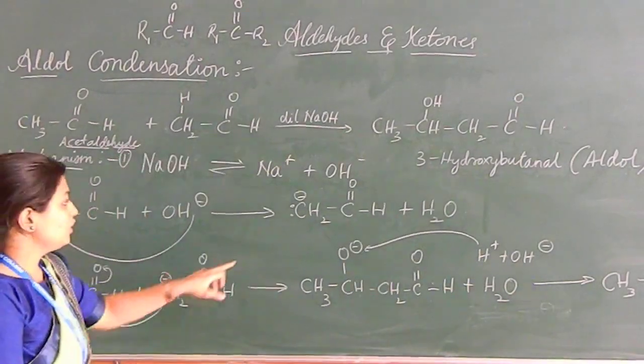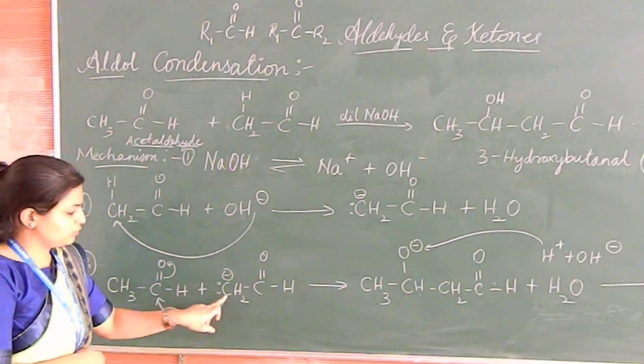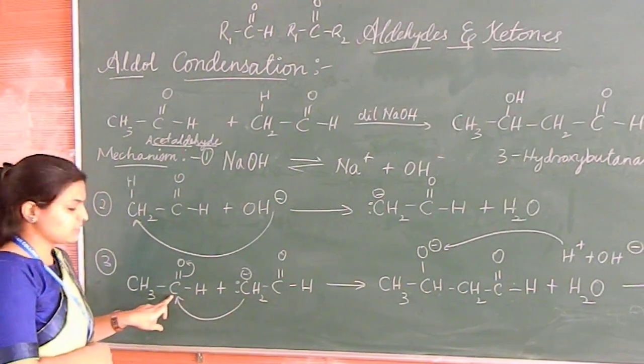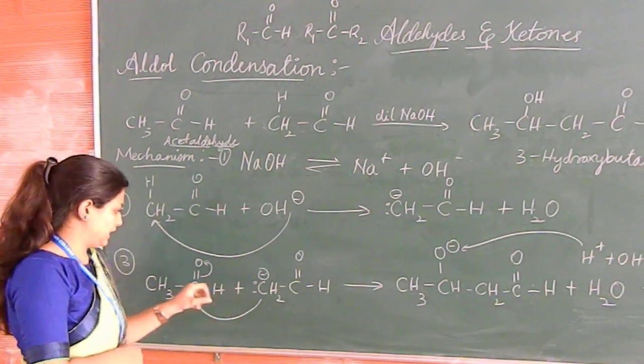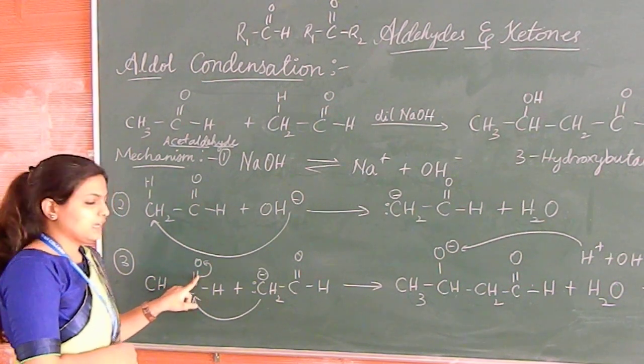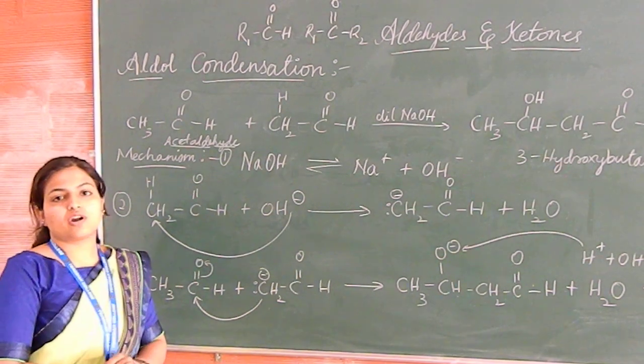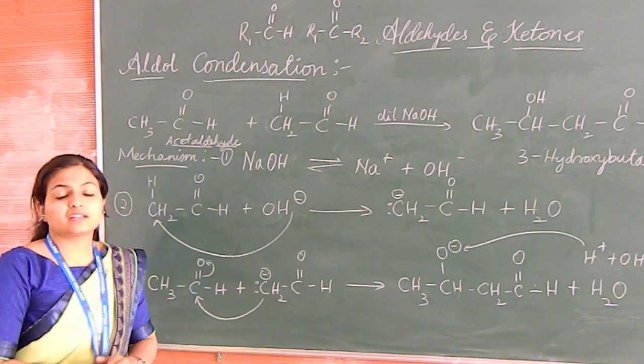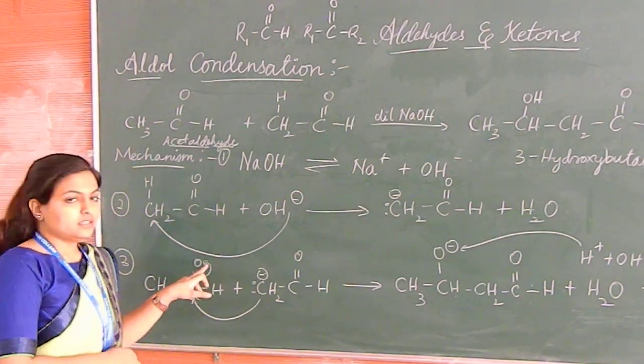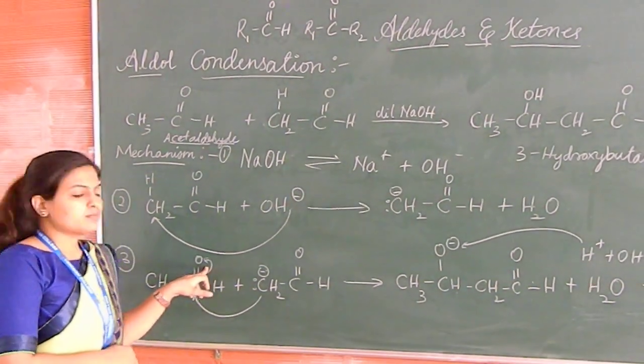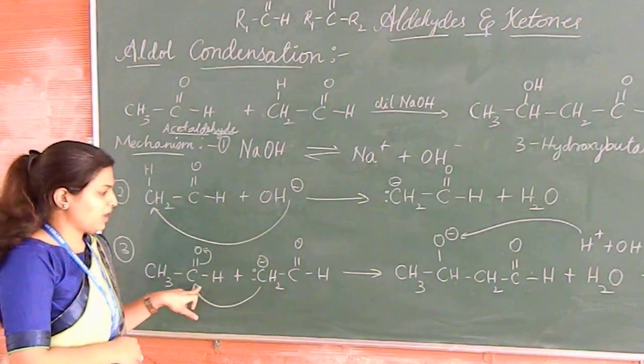Now enolate ion goes to the other acetaldehyde unit, the remaining acetaldehyde unit. What does it do? This enolate ion goes and attacks this carbonyl carbon atom. When carbonyl carbon atom is attacked by the enolate ion, the double bond, the pi electrons of this pi bond shift to the more electronegative oxygen. This is called as electromagnetic effect where the movement of the electron takes place intramolecularly to the other atom in the molecule.